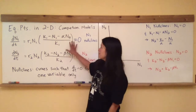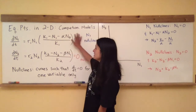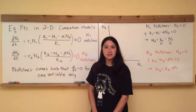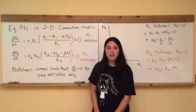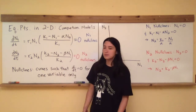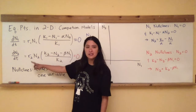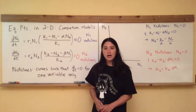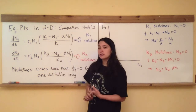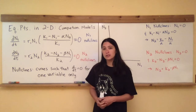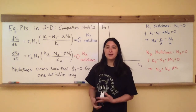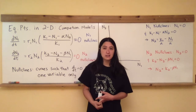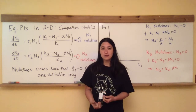Let's talk a little bit about what the model looks like and what that means in terms of the context. Here we have two different species, which we're labeling as N1 and N2. The assumptions of our model are: number one, that both species are growing logistically on their own, and number two, that both species are losing out with their interactions with the other species.